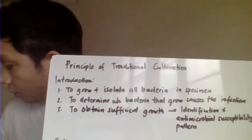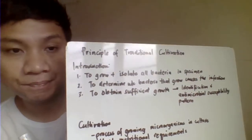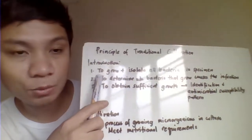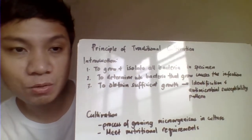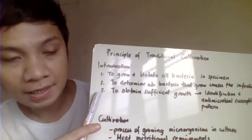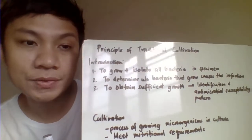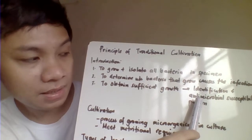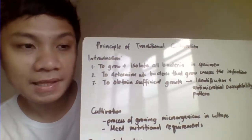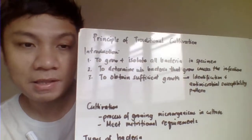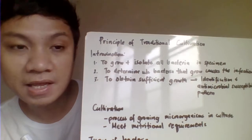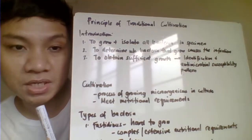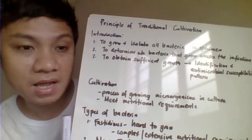The principle of cultivation is to grow and isolate bacteria from our clinical specimens. Growing bacteria in different culture media allows us to identify the specific bacteria responsible for causing infection, and also allows us to perform further tests like biochemical testing and antimicrobial susceptibility testing to determine the most effective antibiotic.